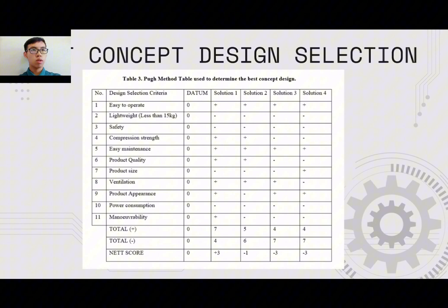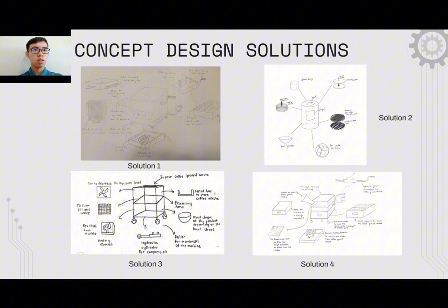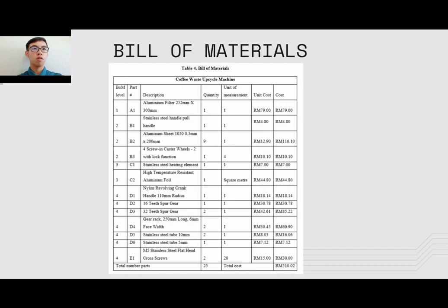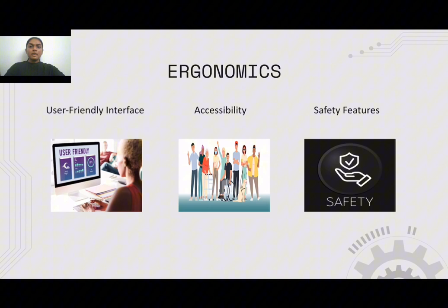We have the best concept design selection using a Pugh matrix. In the Pugh matrix, there are four solutions, and solution one is ranked number one with seven pluses and four minuses, giving a net score of three pluses. The concept designs are shown in the figures on the next slide, and there is also a bill of materials which shows the quantity and cost of the product.